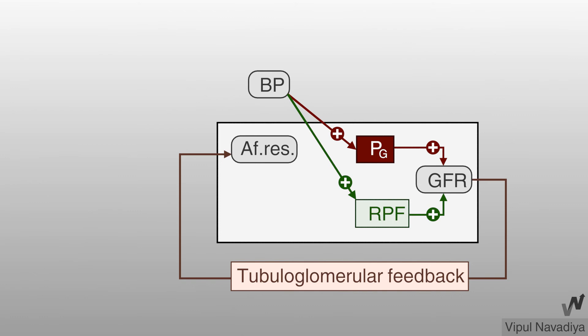To summarize the same thing in chart: rise in blood pressure initially causes rise in GFR which activates tubuloglomerular feedback mechanism which leads to rise in afferent arteriolar resistance which finally counteracts initial rise in GFR.